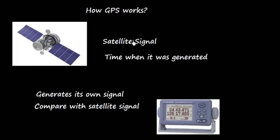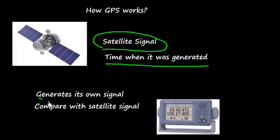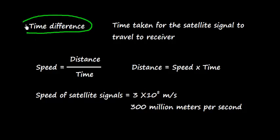Now let's discuss how GPS works. There is a satellite that gives a signal, and the time when it was generated is recorded. The receiver generates its own signal and compares it with the satellite signal. The basis of GPS is the constellation of satellites that are continuously orbiting the Earth. These satellites are equipped with atomic clocks which transmit radio signals. At the same time, the receiver on Earth also generates its own signal and signal comparison is done. A time difference is obtained, and this tells the time taken for the satellite signal to travel to the receiver.